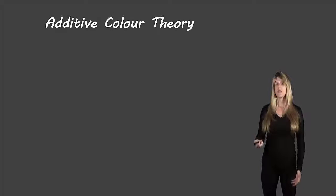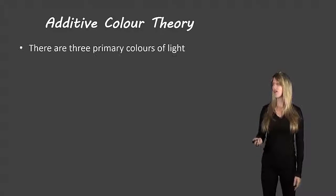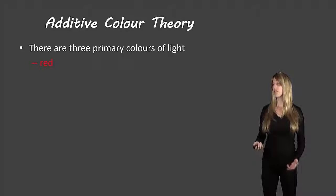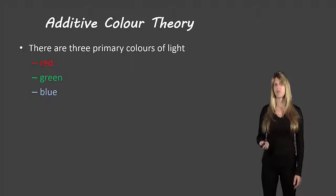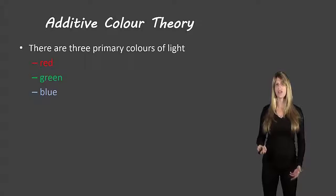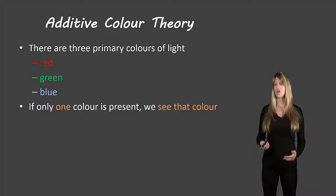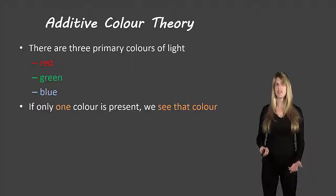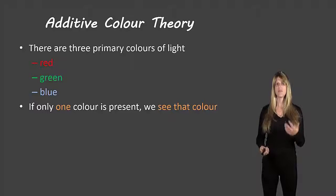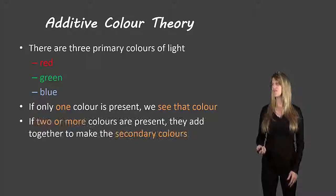Let's take a look at our additive color theory. There are three primary colors of light: red, green, and blue. Those are the three primary colors of light. If only one color is present, we see that color — so if only red light is present, then we see red.